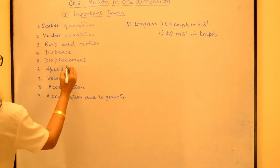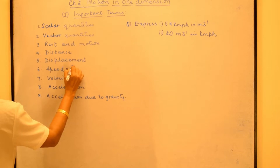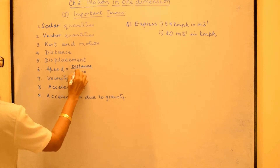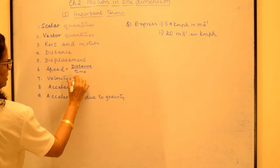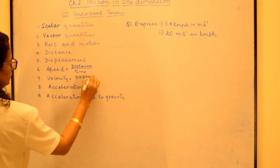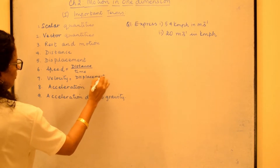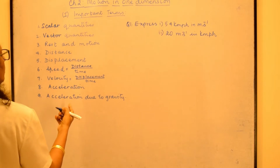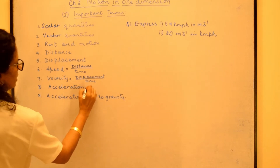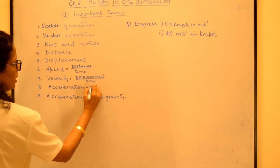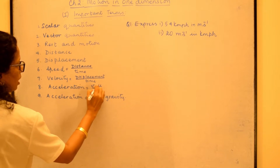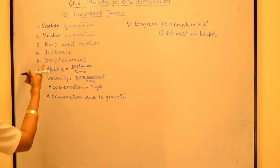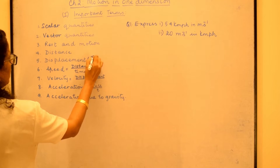Now let us come to speed and velocity. When we talk about speed, speed is distance upon time. We are looking at these as the formulae when we do the numericals. Acceleration is the rate of change of velocity, so that becomes V minus U upon T. Acceleration is a vector quantity, velocity is a vector quantity, and displacement is a vector quantity, denoted as shown.